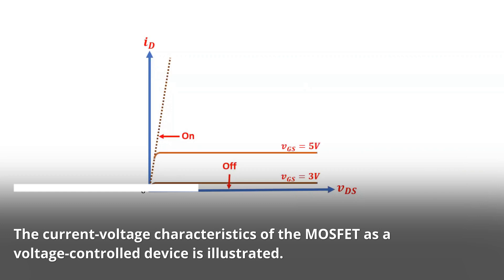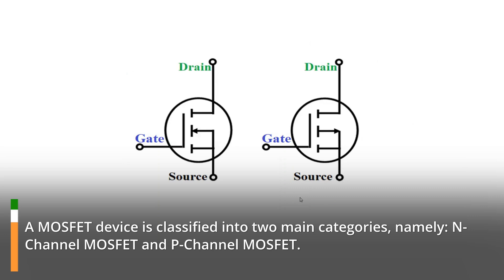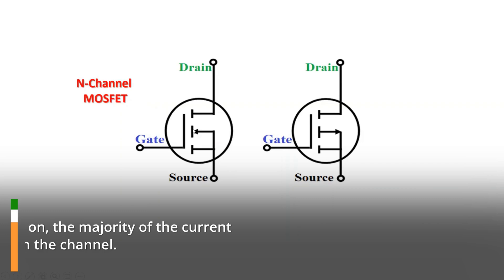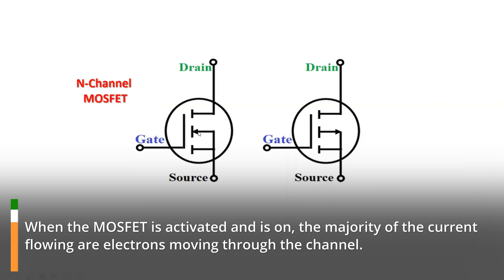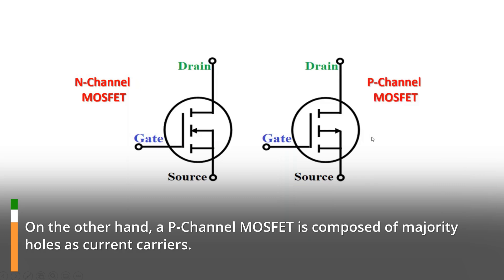The current-voltage characteristics of the MOSFET as a voltage-controlled device is illustrated. A MOSFET device is classified into two main categories, namely N-channel MOSFET and P-channel MOSFET. An N-channel MOSFET is a type of MOSFET in which the channel is composed of majority electrons as current carriers. When the MOSFET is activated and is on, the majority of the current flowing are electrons moving through the channel.